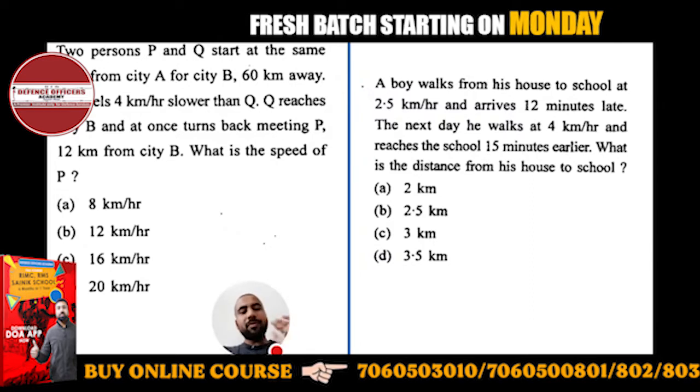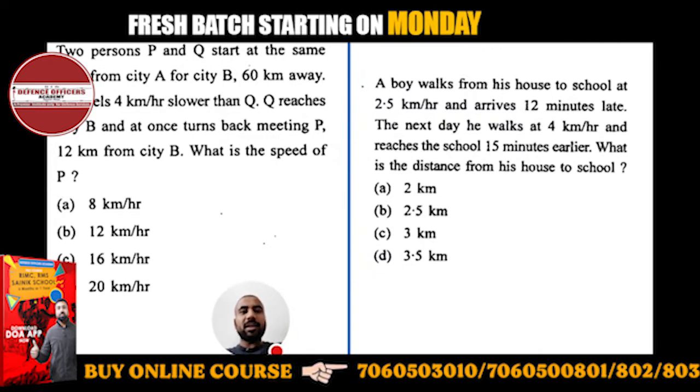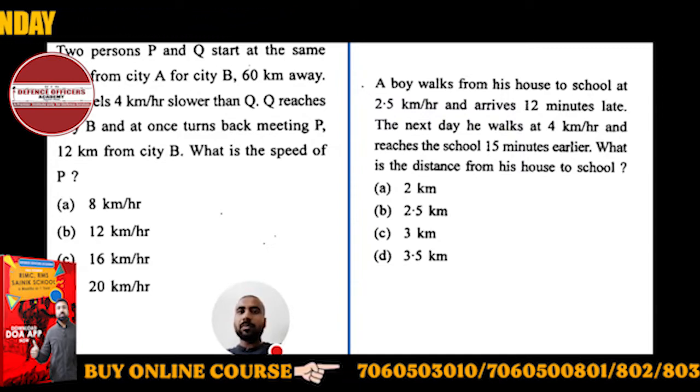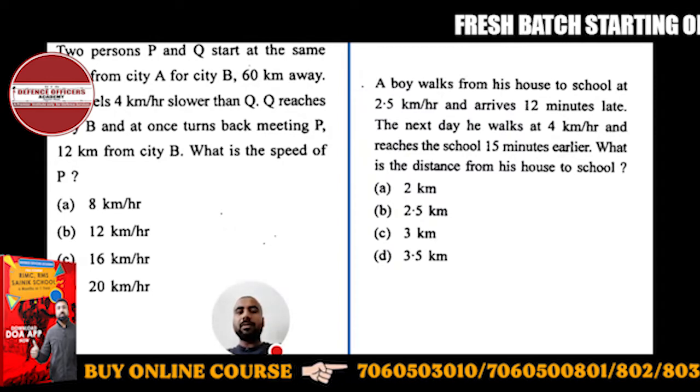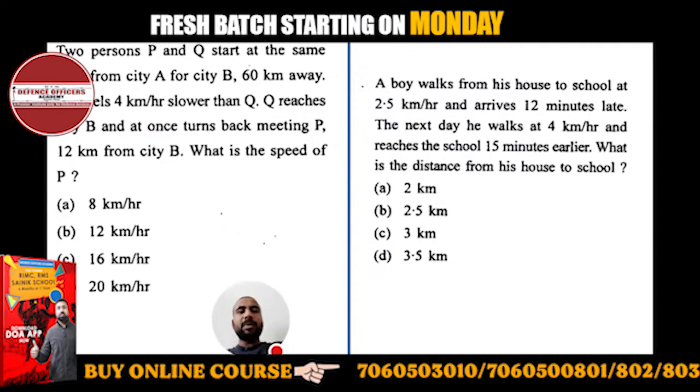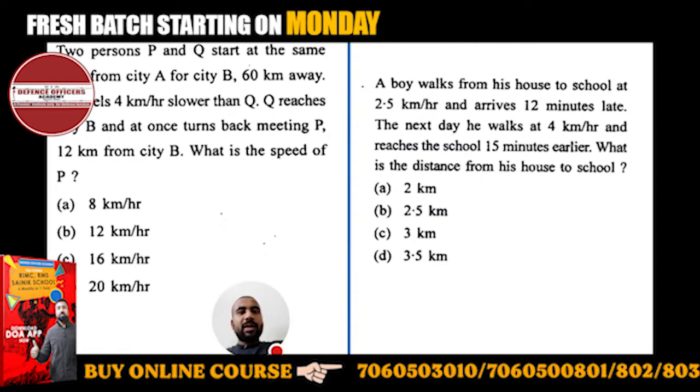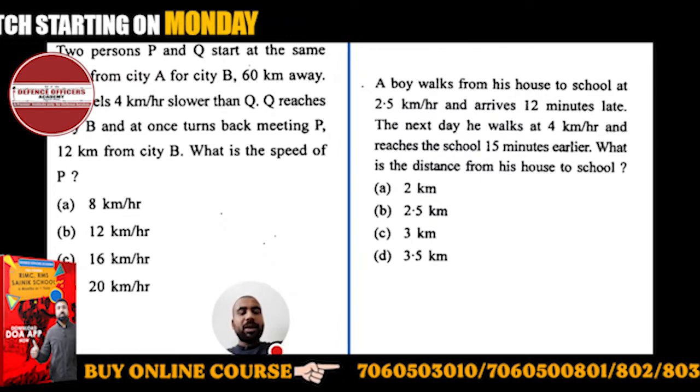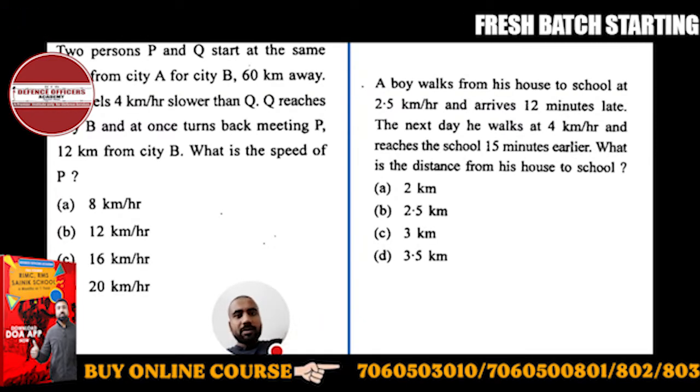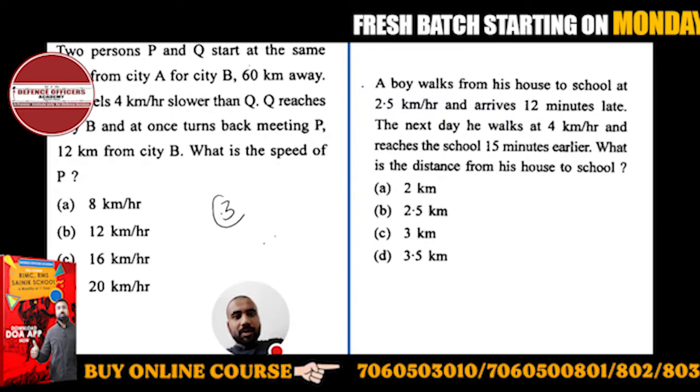This might seem confusing, but you just have to understand the language. Try to understand. There are two persons, P and Q, starting at the same time from city A to B.